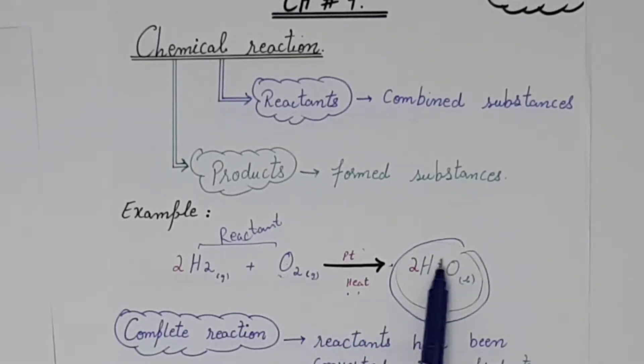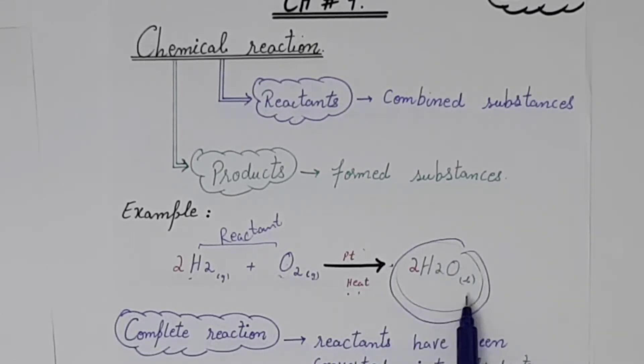Now, if you come back to your example, hydrogen when you react with oxygen molecule, in the presence of platinum and heat, you will get a molecule of water, which is in the form of liquid. Both reactants are in the form of gas. Small g represents the gas state, and l represents the liquid state. When they react together, they become a molecule of water.